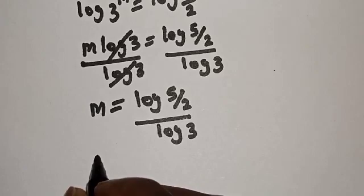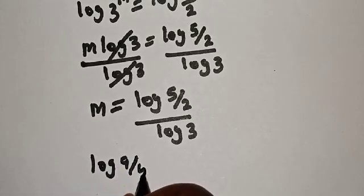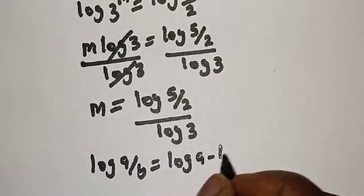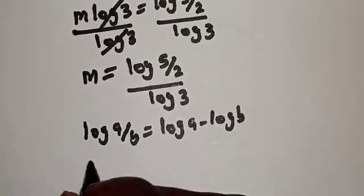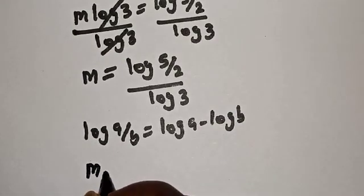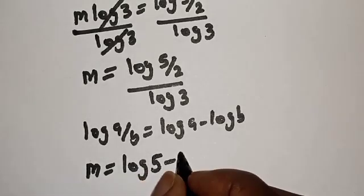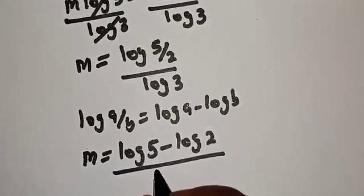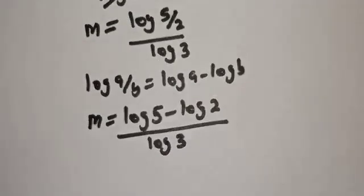Take note of this rule: if you have log(a/b), this equals log a minus log b. Then we have m equals (log 5 minus log 2) over log 3.